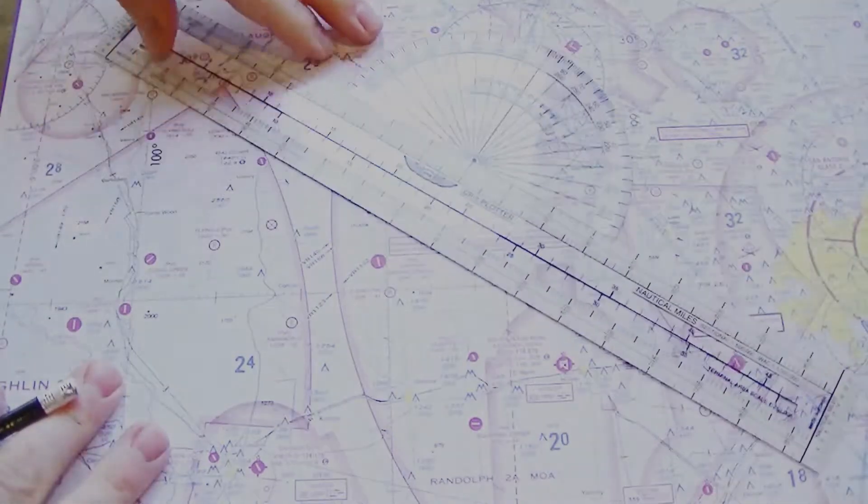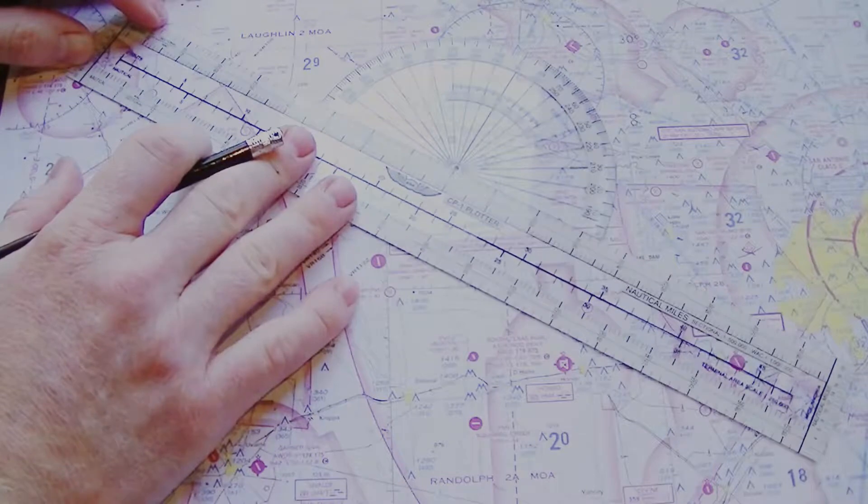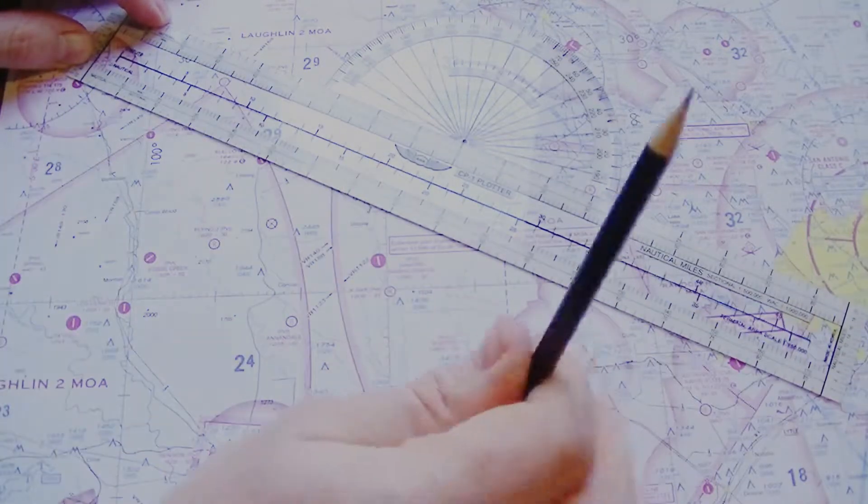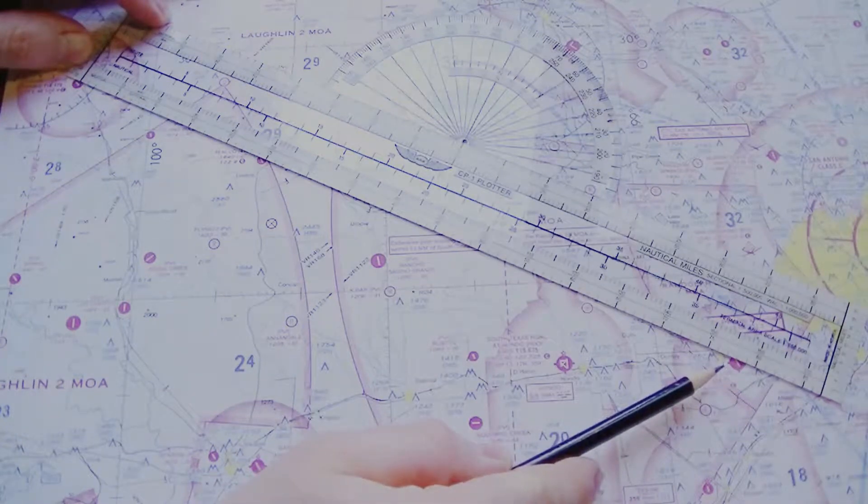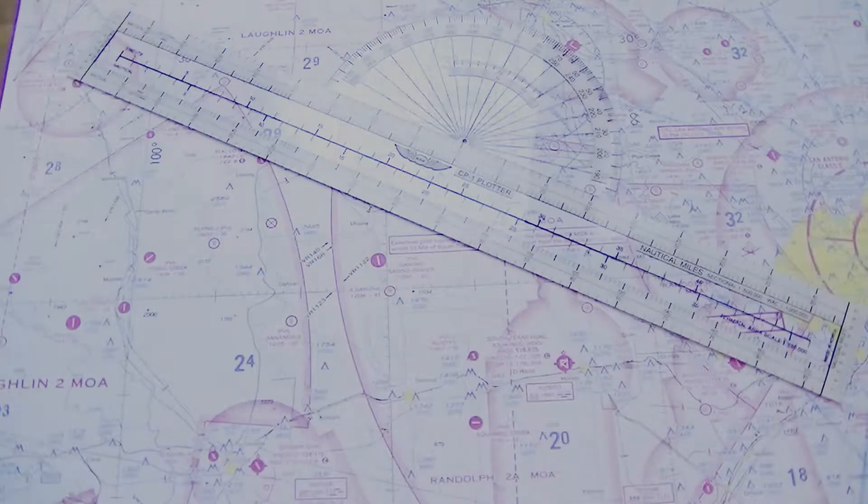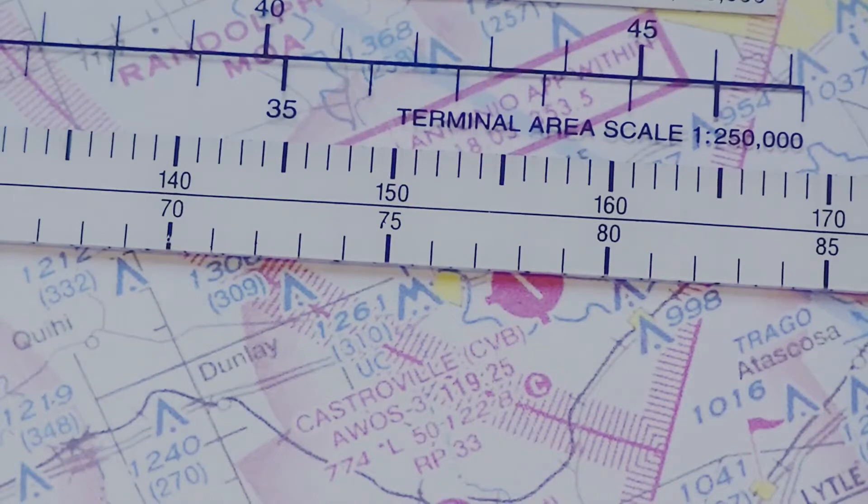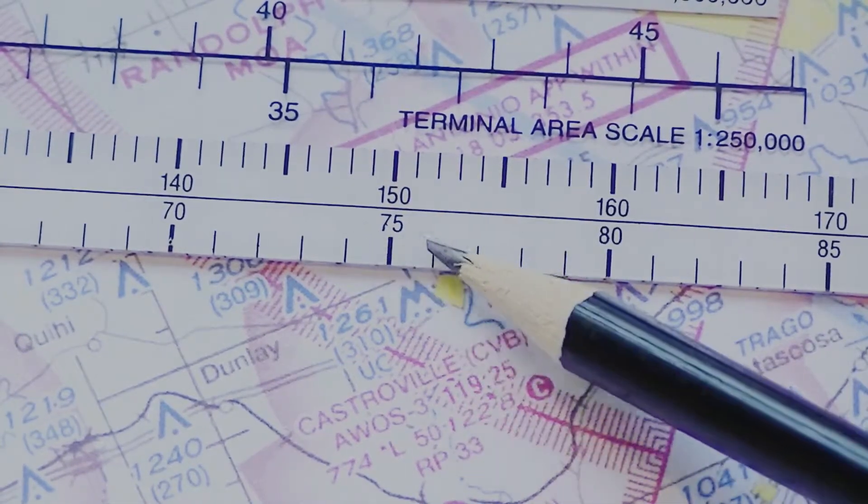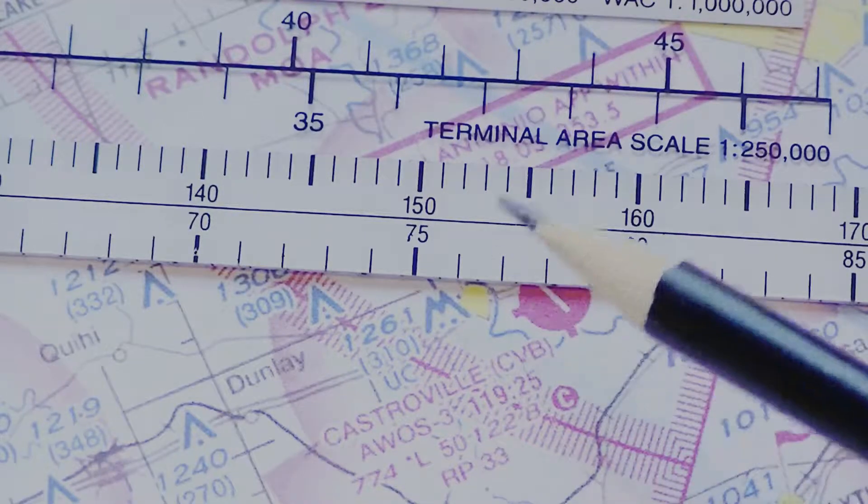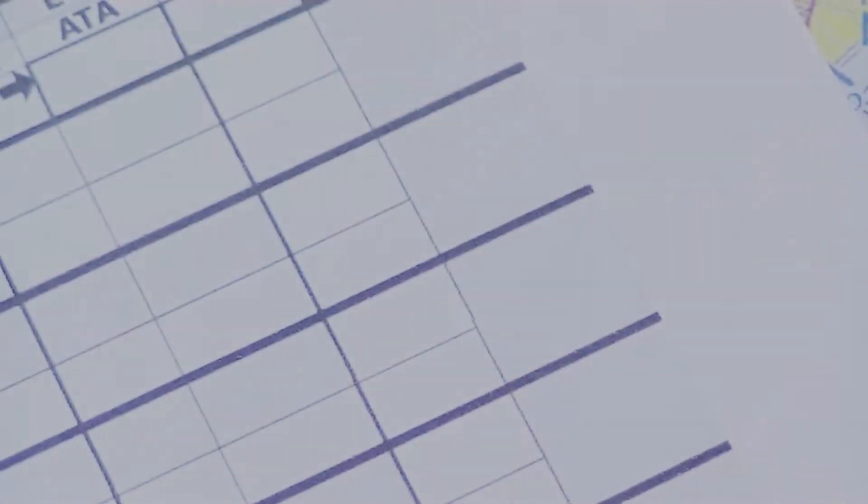We'll line up our airport that we're departing from, Edwards County, on zero, and then pass the plotter directly through our destination airport down here at Castroville. The first thing I can do is just get my distance. If I zoom in here, you'll see my distance is about 78 nautical miles.